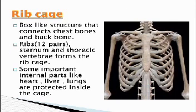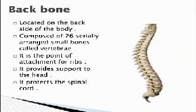Now the ribcage. It is a box-like structure that connects the chest bone and backbone. There are twelve pairs of ribs. The sternum and thoracic vertebrae form the ribcage. Some important internal parts like the heart, liver, and lungs are protected inside this cage. The backbone is the most important part of our body, located on the back side. It is composed of 26 serially arranged small bones called vertebrae. It is a point of attachment for ribs, provides support to the head, and protects the spinal cord.